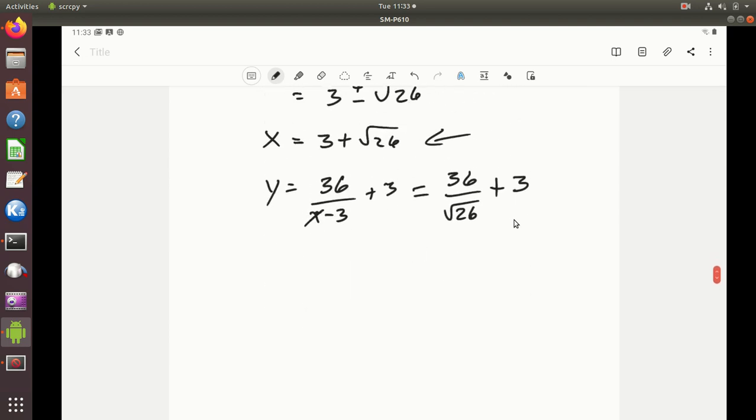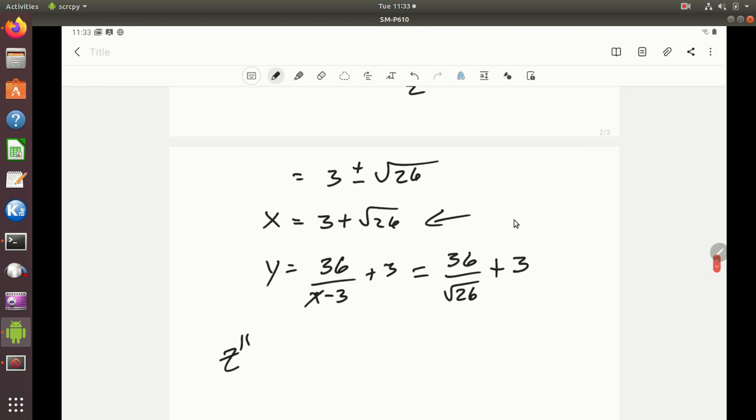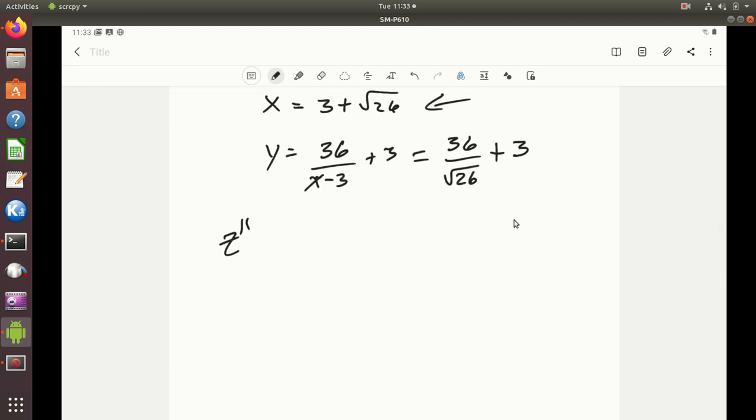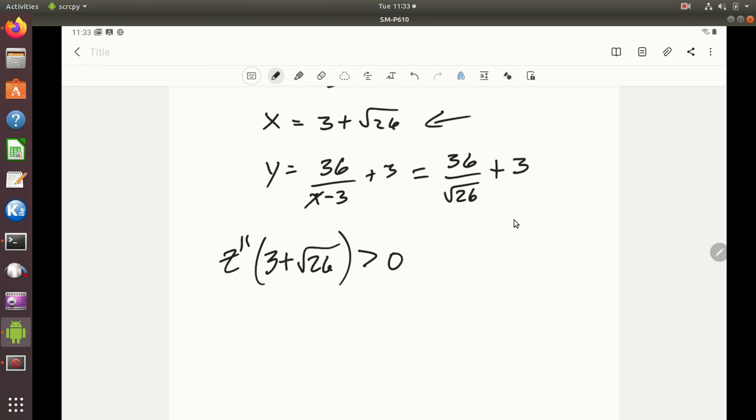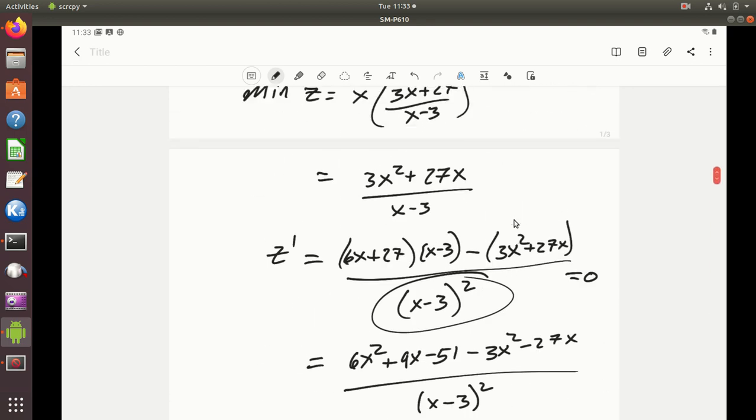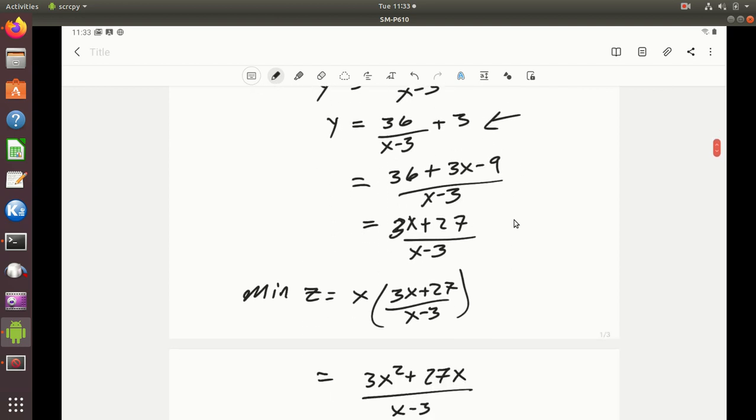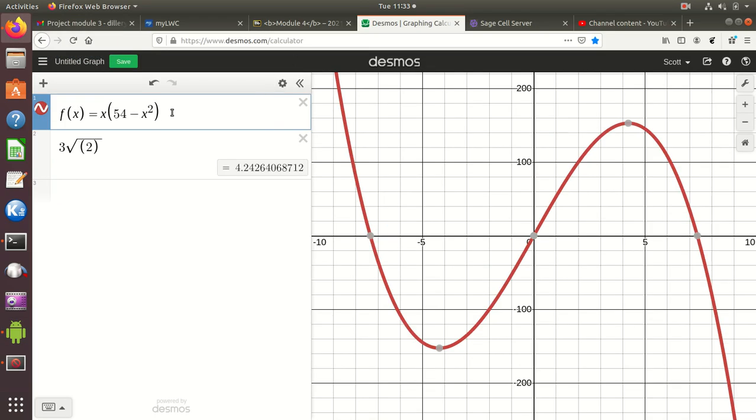So I believe that this is probably going to be the answer. Now I can take the second derivative of this x and y. Well, that I think I'll leave to Desmos. And so let's take a look at z double prime of x and make sure that that is indeed positive. So is it the case that z double prime of 3 plus square root of 26, is that greater than 0? So we can go check our work here with Desmos on all of this. I'm going to scroll back here. So I've got my function, my original function that I'm dealing with there. And let's go to Desmos.